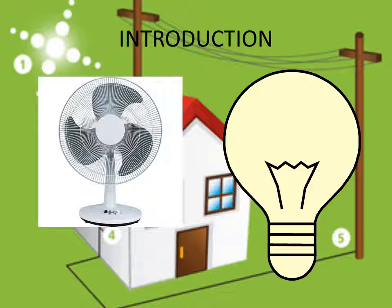We use electric current in many ways at home — to run fans and air coolers during summer, to light our home at night, to run room heaters in winter, in refrigerators to keep things fresh at low temperature, in heaters to heat water, in electric heaters to produce heat for cooking, and to run radio, television, and music systems.